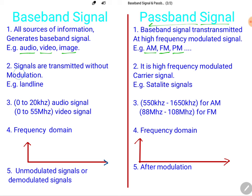Baseband signal is transmitted without modulation. One example is landline communication, where an audio signal ranging from 0 to 20 kilohertz is directly sent without modulation. Passband signal, on the other hand, is a high-frequency modulated carrier signal. For example, in satellite communication and mobile communication we use passband signals.